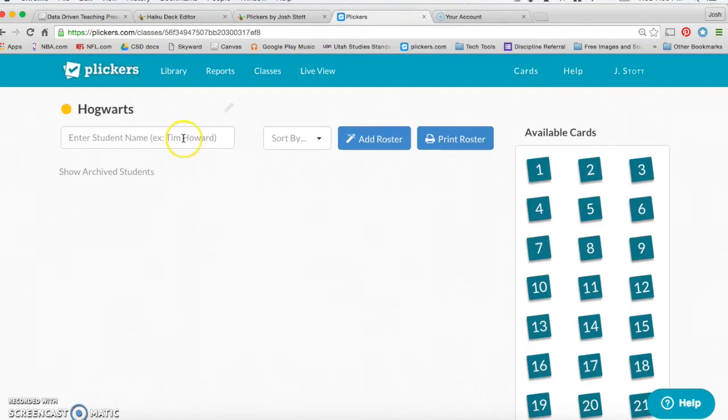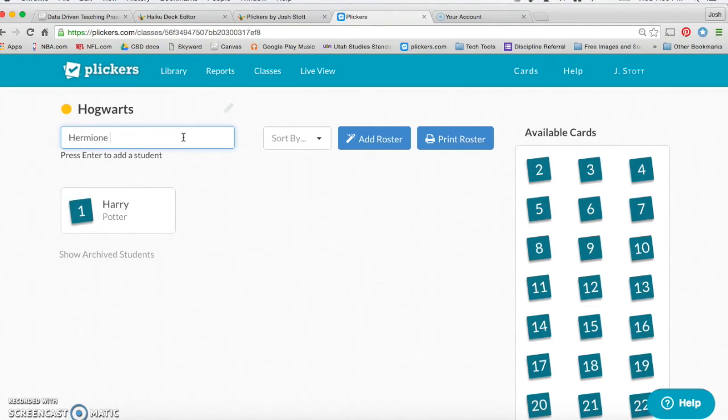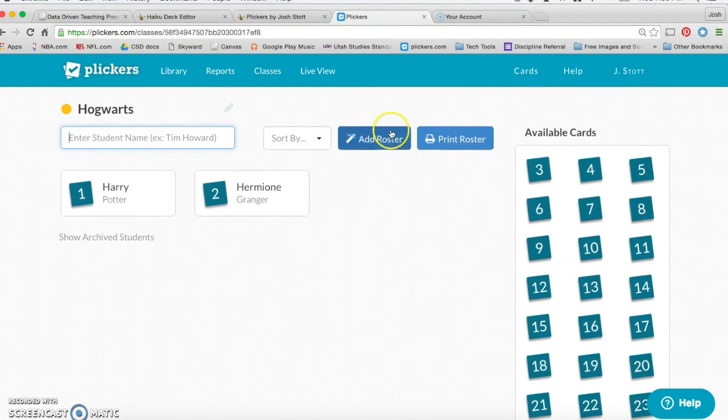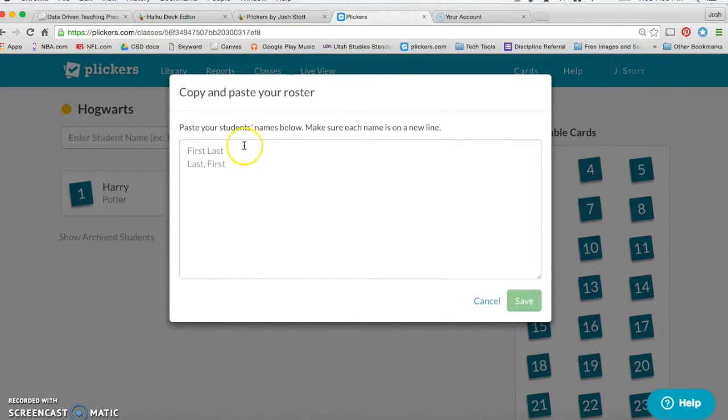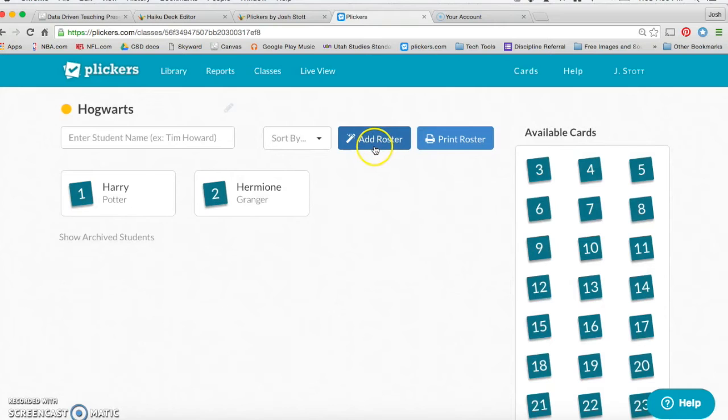Then, you can add students by typing their names in here. We'll get Harry Potter in here. Then, Hermione Granger. She is the brightest witch of her age. You could also just paste a bunch of students' names in here, in the Add Roster section, if you wanted to mass copy and paste them in.